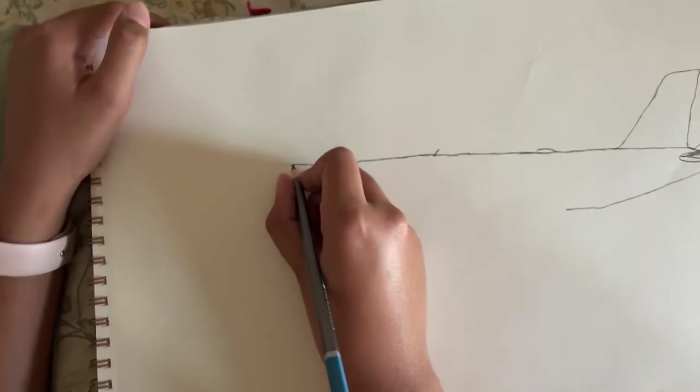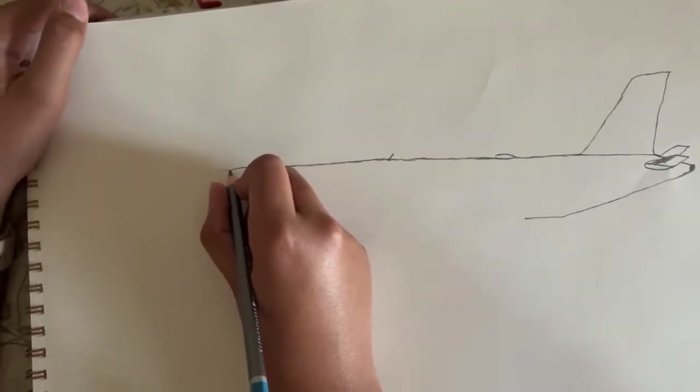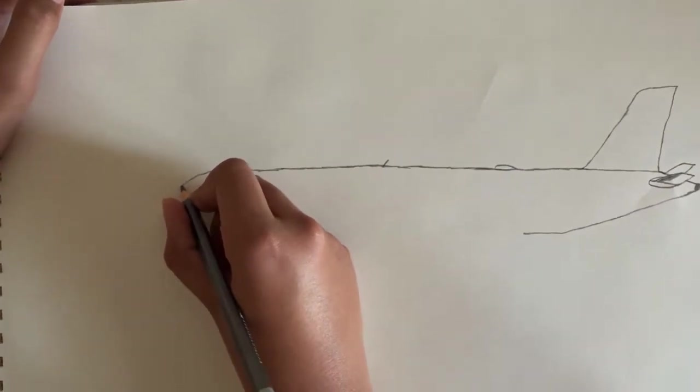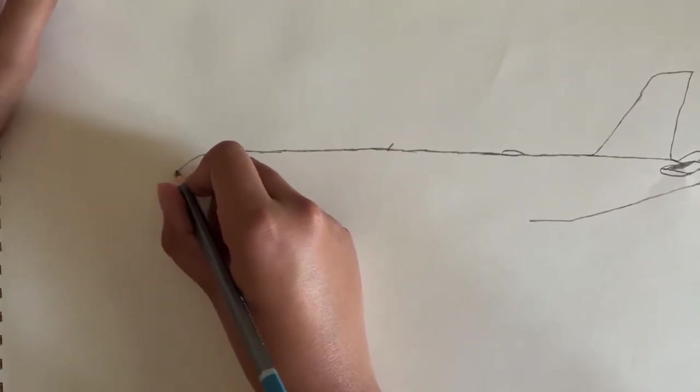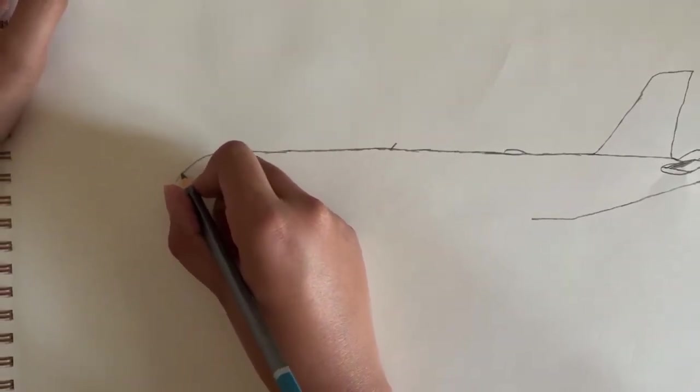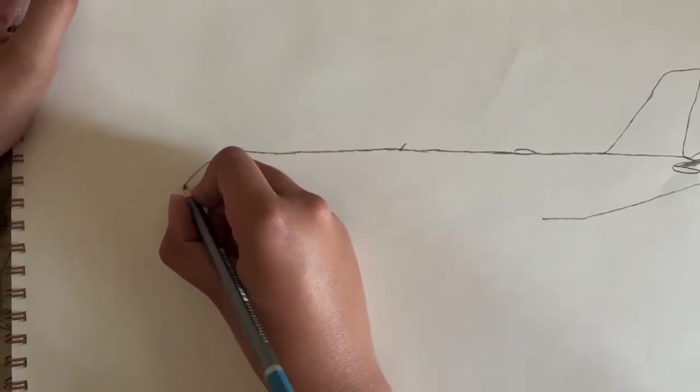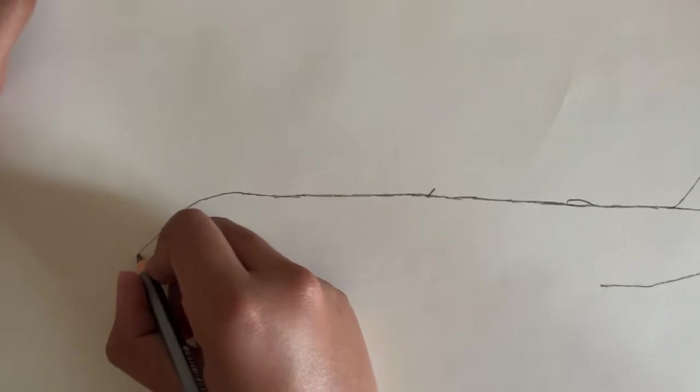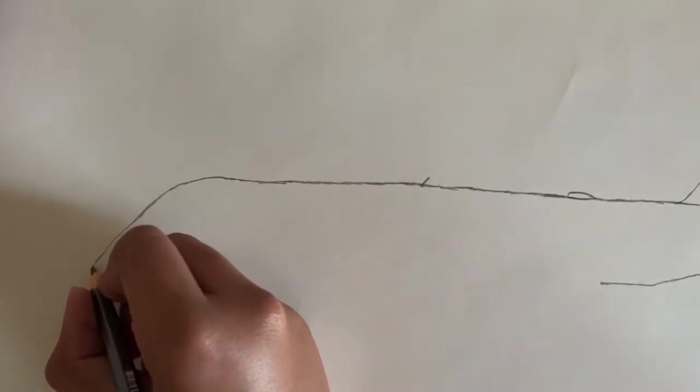Okay, and now we will draw the front of the plane. We're closer to the cockpit. This is the nose, just the nose.